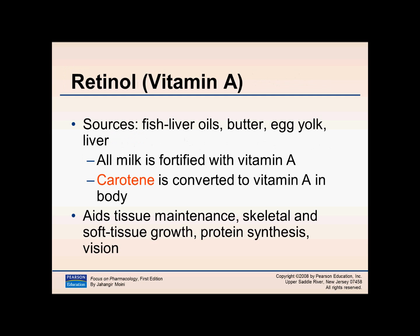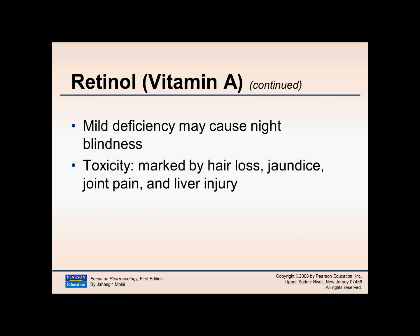Now we're talking about vitamin A, which is a fat soluble vitamin. Sources include fish oil, butter, eggs, and milk — which is fortified with vitamin A. Carotene is converted to vitamin A in the body. Vitamin A aids in tissue maintenance, skeletal and soft tissue growth, protein synthesis, and vision. Toxicity, because this is a fat soluble vitamin, can cause hair loss, bone pain, and liver injury — so it is very serious.